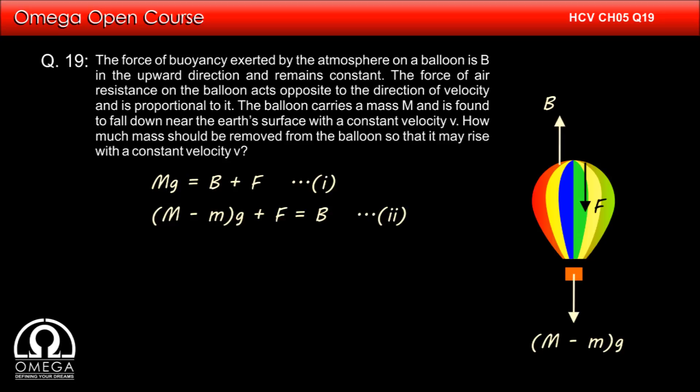Adding the two equations, we get 2Mg - mg is equal to 2B or 2M - m is equal to 2B/g which implies m is equal to 2M minus 2B/g. This is our answer.